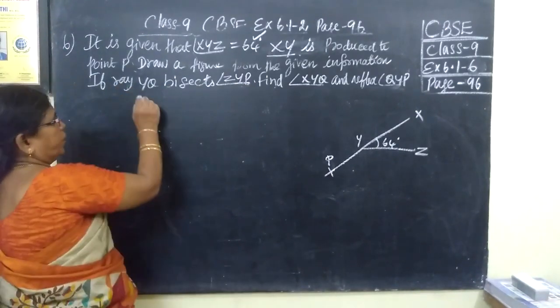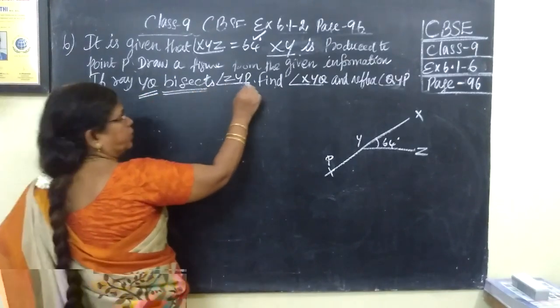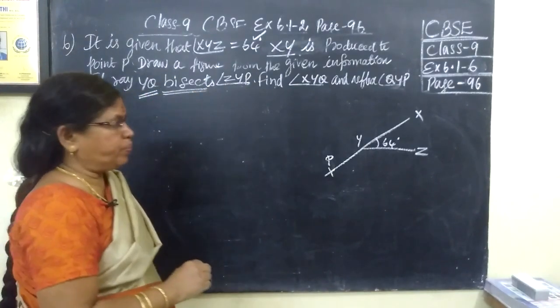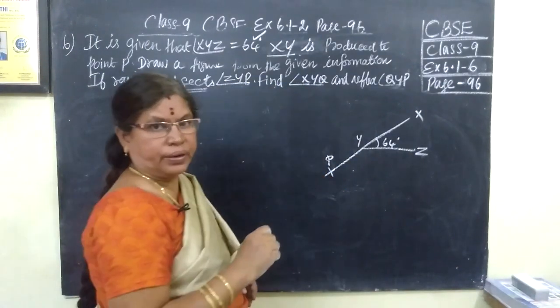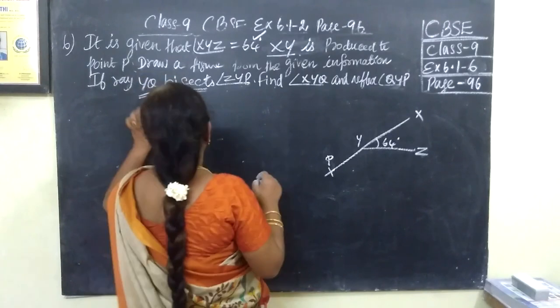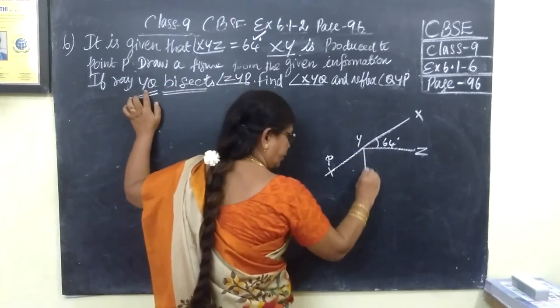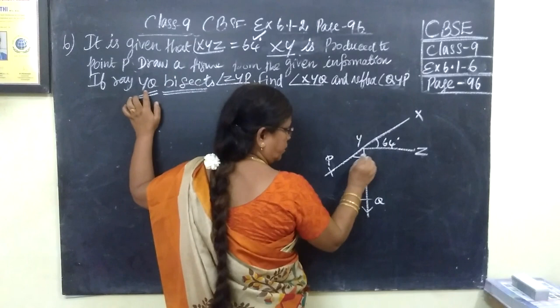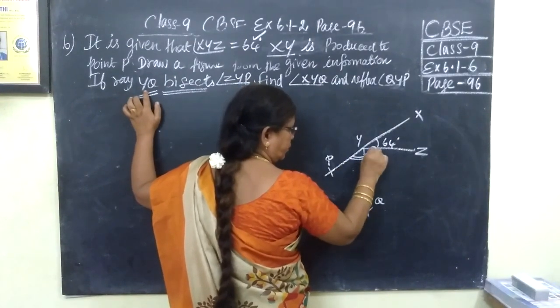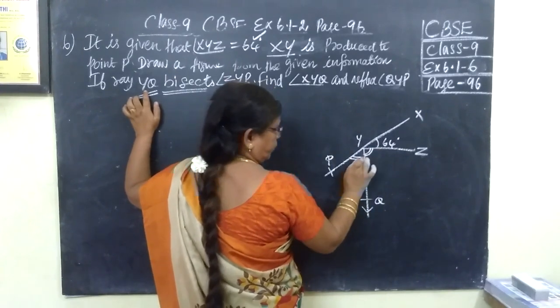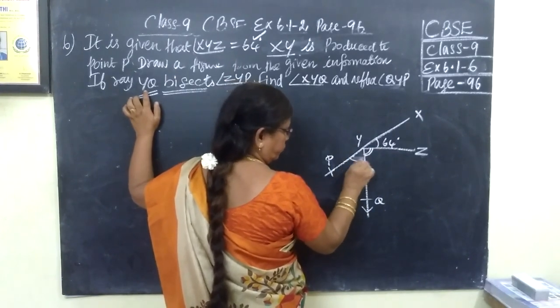If ray YQ bisect angle ZYP. Which is ZYP? This is ZYP. This is bisected by the ray YQ. So draw YQ. This bisect means these two angles are equal. So you can draw in this way.